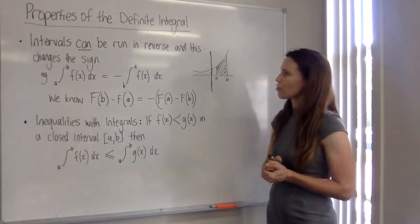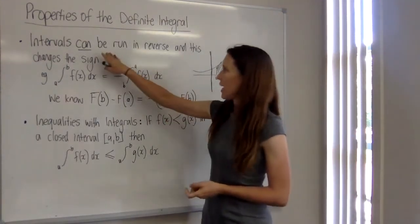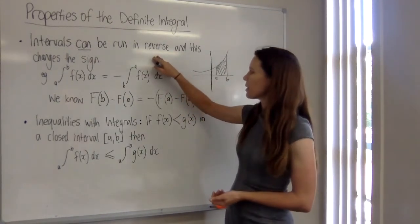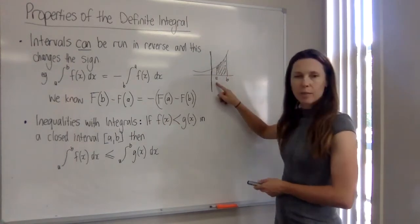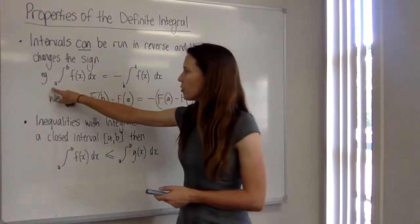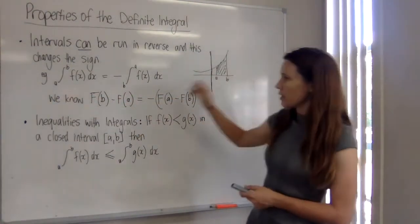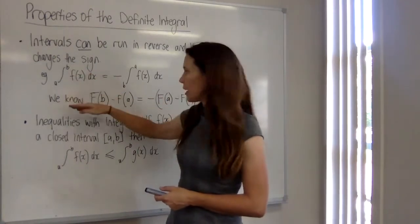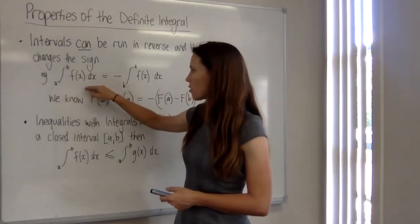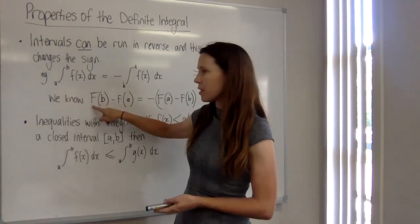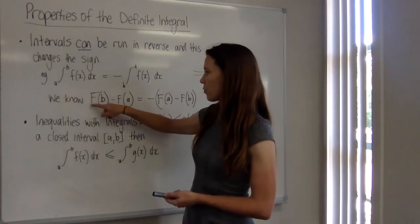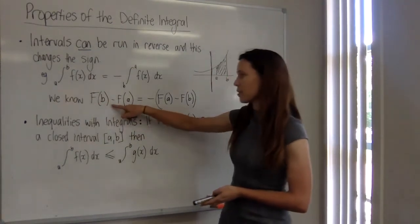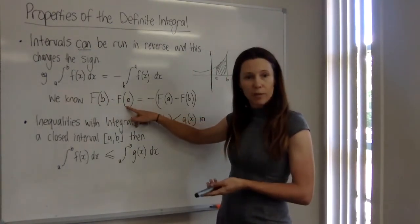And a couple more tricks. Intervals can be run in the reverse direction. Now what this means is that usually we would put our lower bound, a, down the bottom, and our upper bound, b, up the top. And when we go ahead and find the value of this definite integral, what we do is we find the primitive capital F of x and we sub in the upper value first. We find big F of b and then we subtract big F of a.